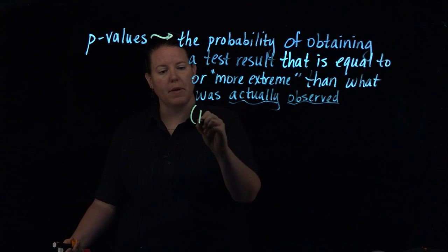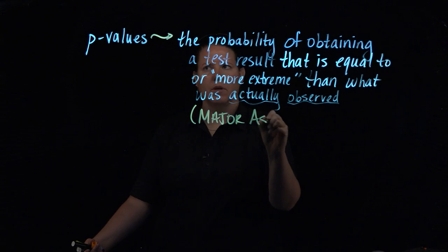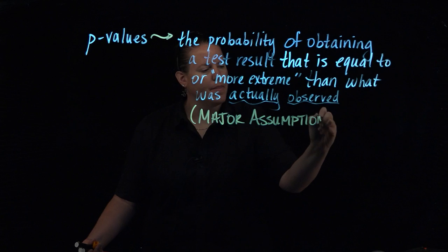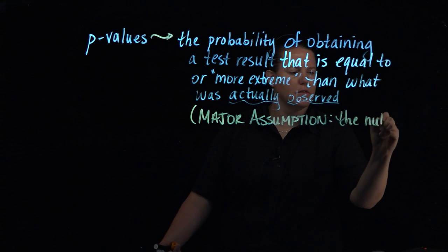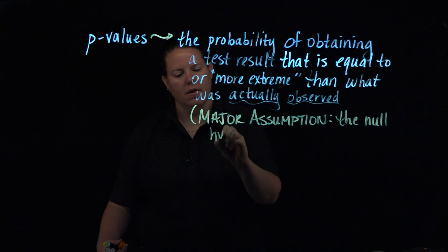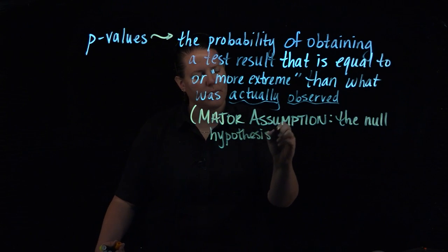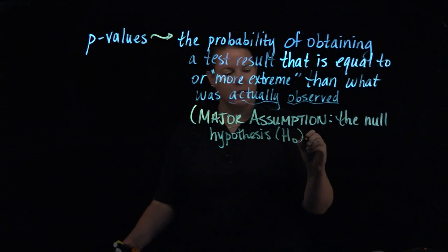whatever your null hypothesis is, you are assuming across the board that that is absolutely 100% true. So this is with the major assumption, the null hypothesis, which we call H with a zero by it, H₀, is true.